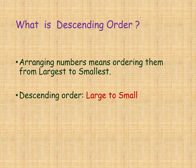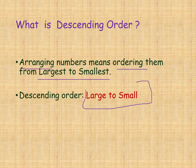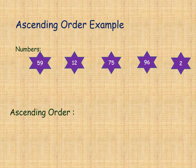What is descending order? In the given numbers, you should arrange them in order from largest to smallest. This is the descending order — large to small.